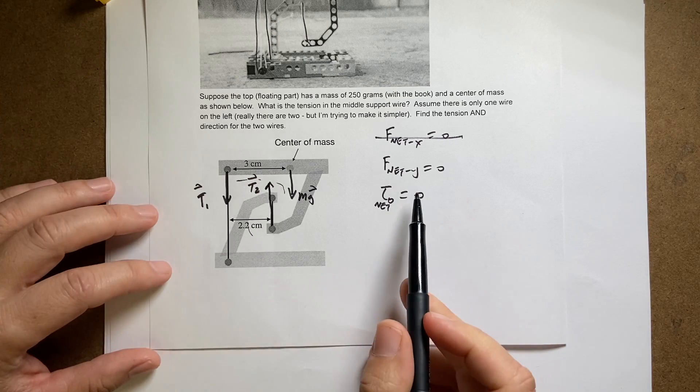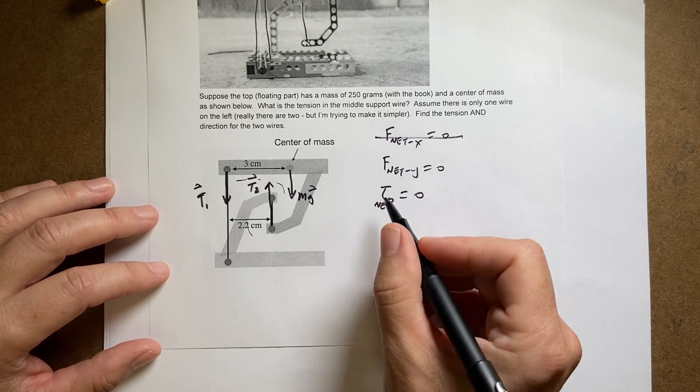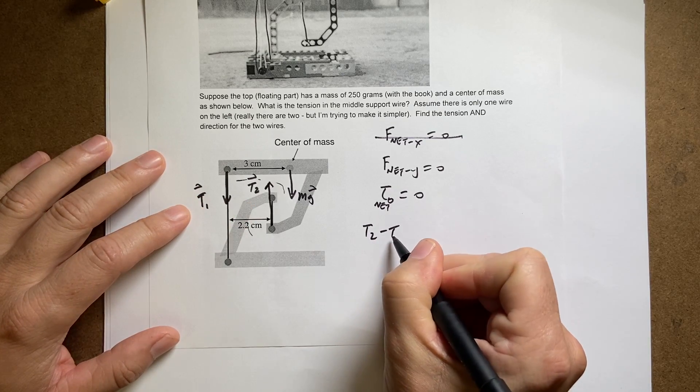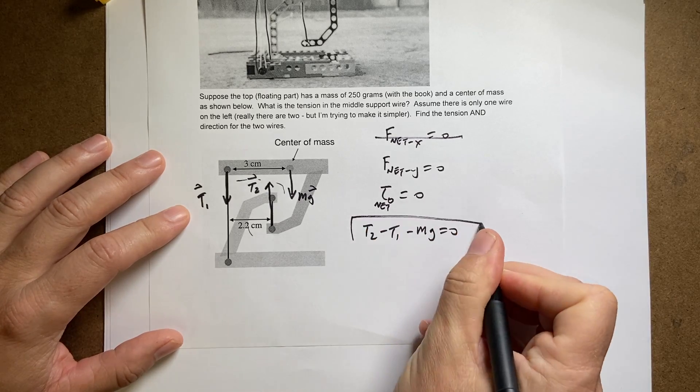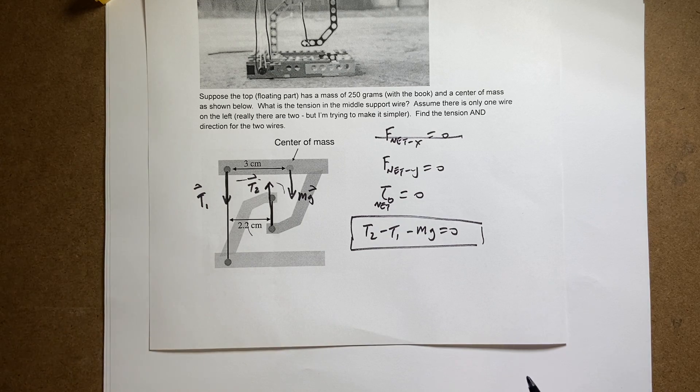So I know that the forces have to add up to zero in the y direction. So let's write that down. So I have T2 minus T1 minus mg equals zero. I know that it has to be true. I don't know T2 and I don't know T1. So there's not much I can do there.